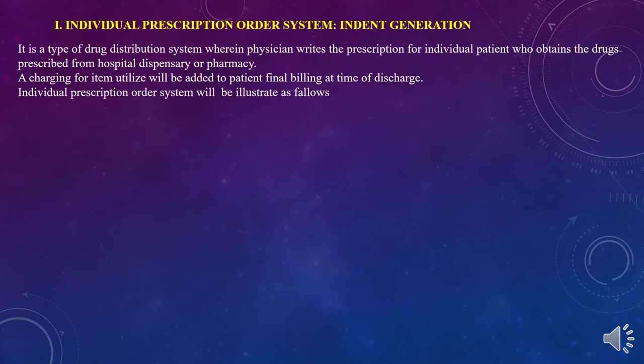The first type is the individual prescription order system, also called the indent generation system. This is a type of drug distribution system wherein the physician writes a prescription for the individual patient, who obtains the drug from the hospital dispensary or pharmacy. Charges for items utilized are added to the patient's final bill at the time of discharge.